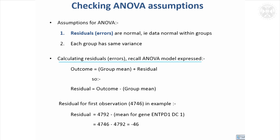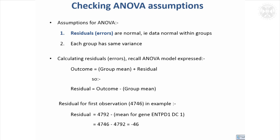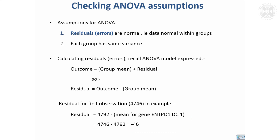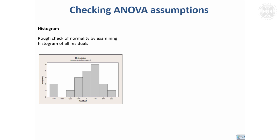The residual is what's left over on top of the group mean for each observation. You get it by taking the outcome minus the group mean. For example, our first observation was 4746, and taking off the mean for that particular gene group — 4092 — we get a residual of minus 46. We do that for all observations. It's those error terms in the model, these residuals, that are assumed to be normally distributed.